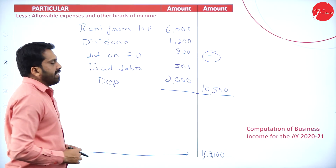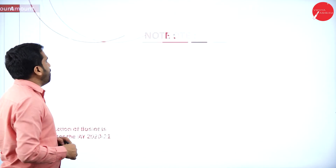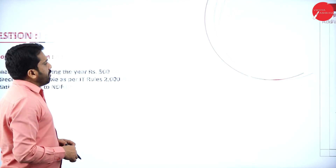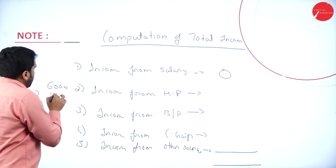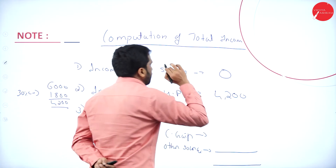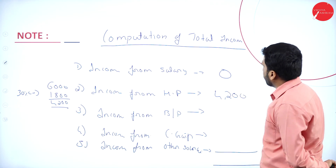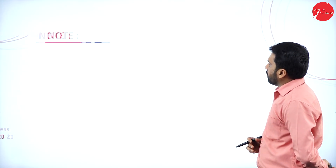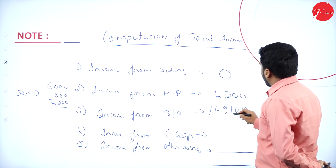Since Sri Ganesh is doing business, income from salary is blank. Income from house property: rent received is 6,000 minus 30% standard deduction of 1,800, giving 4,200 as income from house property. There is no loan or other house property expenses. Income from business or profession: 1,49,100 as just calculated.